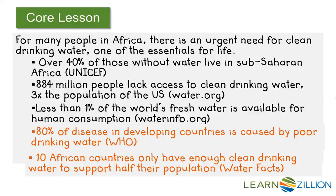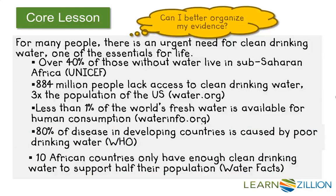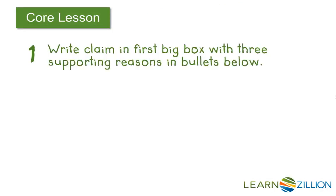That brings me to my next step: can I better organize my evidence? Very rarely are you just going to write down your evidence in the most effective order possible. I'm going to lead off with less than 1% of the world's fresh water — that immediately signals the magnitude of the problem for people around the world. Then with my later points I can move into Africa and show that Africa is the hardest hit. The order may change once you start writing — that's the writer's choice — and it can always be fixed during the revision stage.